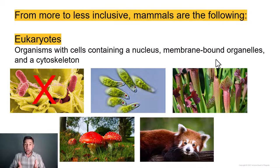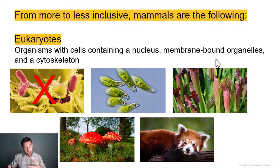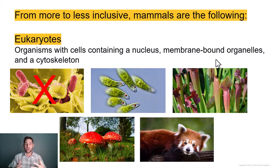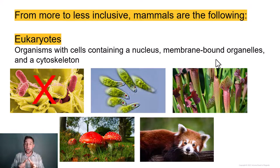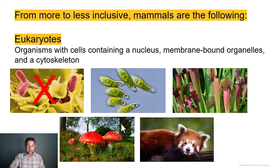We know that mammals consist of eukaryotic cells — that is to say, large, complex cells, at least larger than bacterial cells which are only one to ten microns. These are large complex cells made from membrane-bound organelles like a nucleus that has a nuclear envelope, a nuclear membrane around it. So the eukaryotes include the protists, the plants, the fungi, as well as the animals.